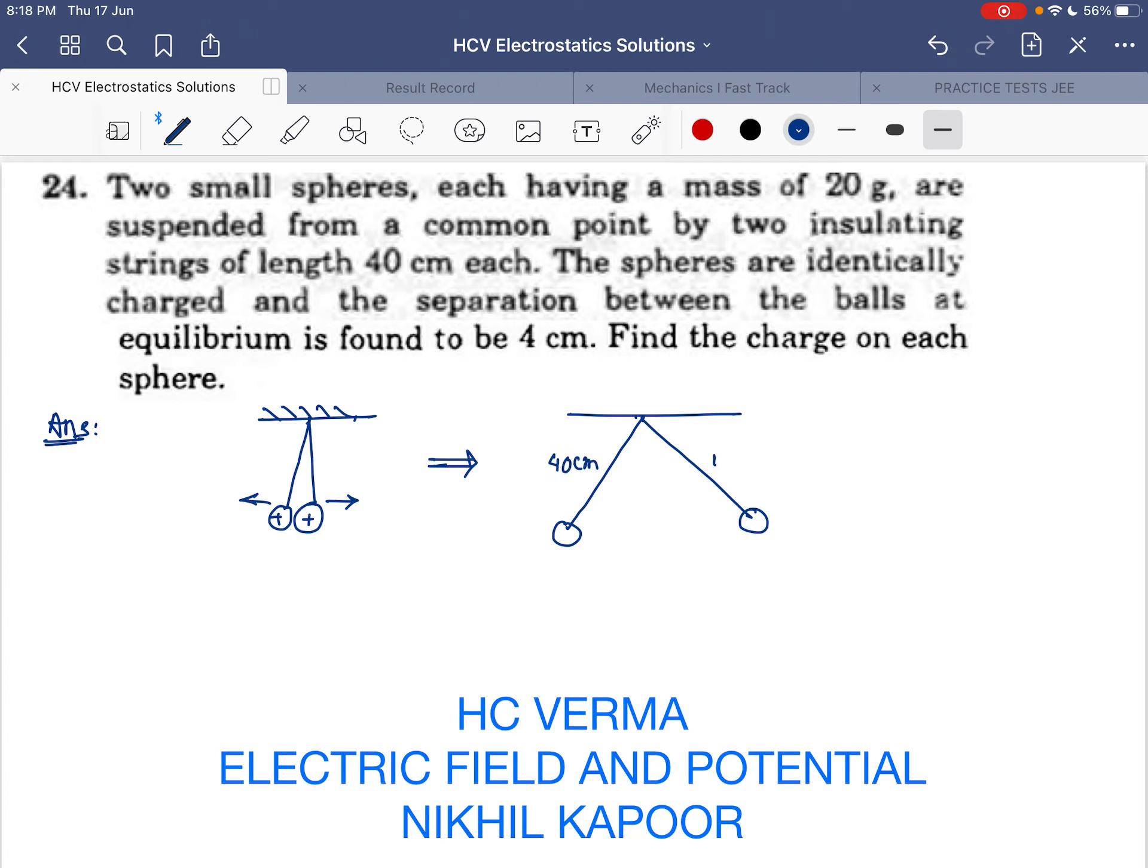The length of the thread is 40 centimeters while the separation between them is 4 centimeters. We need to find the charge on each sphere. Let the charge on the sphere be q. Let this angle be theta. I will draw a perpendicular from the common point, so this will be 2 centimeters and this will be 2 centimeters because it's an isosceles triangle.